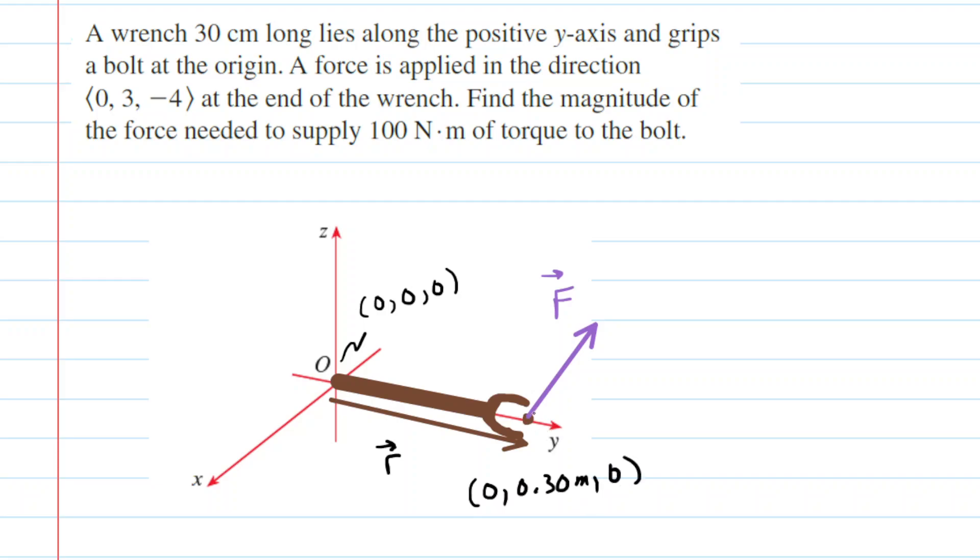And then the right end of the wrench would be located at coordinates (0, 0.30 meters, 0). How did we know that? Well, because the length of the wrench was 30 centimeters, that's equivalent to 0.30 meters, and it's lying exclusively on the positive y-axis. So the x and z coordinates would both be 0, and then the y coordinate would simply be the length of the wrench.